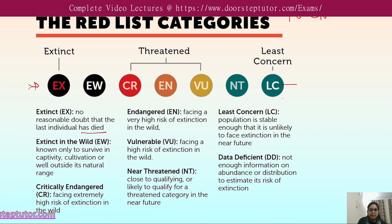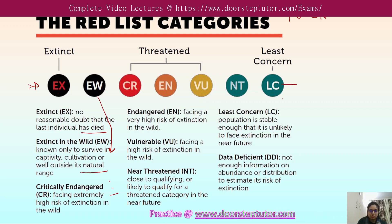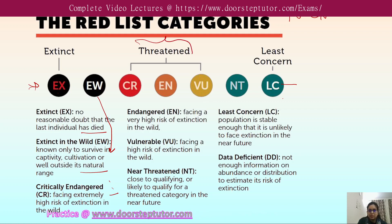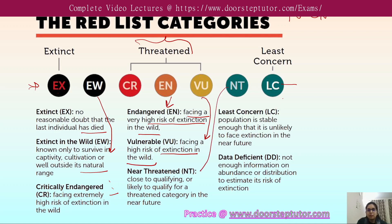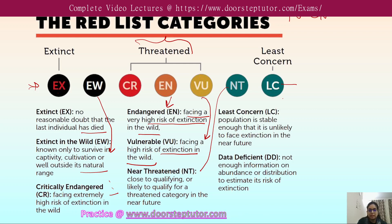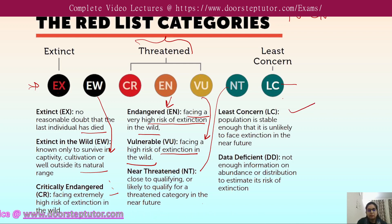'Extinct in the Wild' species survive only in captivity, cultivation, or outside their natural range. 'Critically Endangered' species face an extremely high risk of extinction. 'Endangered' species face a high risk of extinction in the wild. 'Vulnerable' species also face a high risk. 'Near Threatened' species are close to qualifying for threatened status in the near future. 'Least Concern' means the population is stable and unlikely to face extinction.